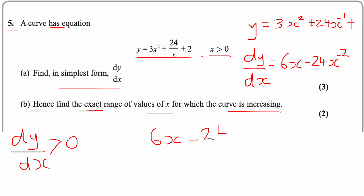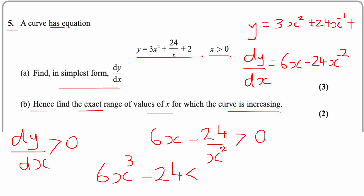We're solving 6x − 24/x² > 0. Multiplying everything by x²: because x > 0, x² is positive, so we get 6x³ − 24 > 0. Taking out the common factor of 6: 6(x³ − 24) > 0.